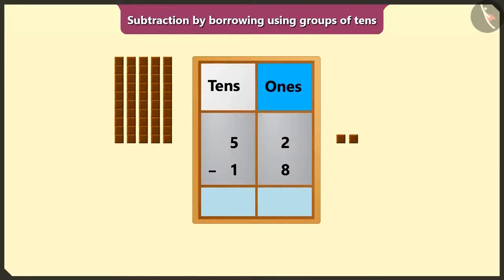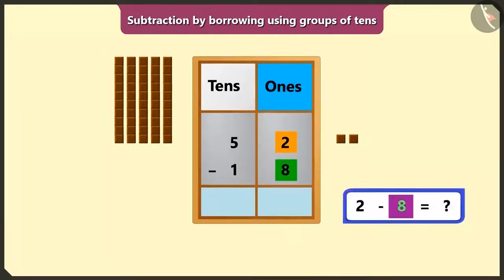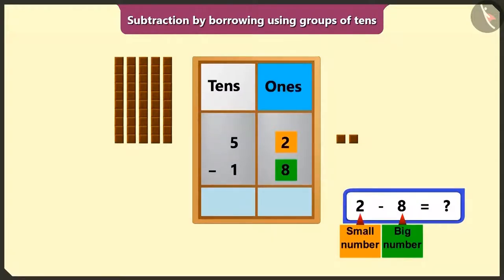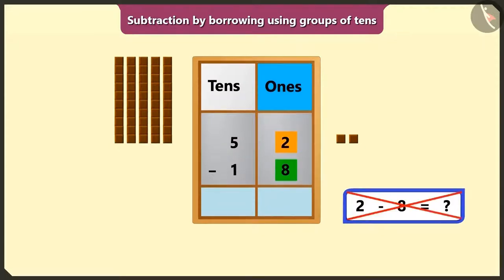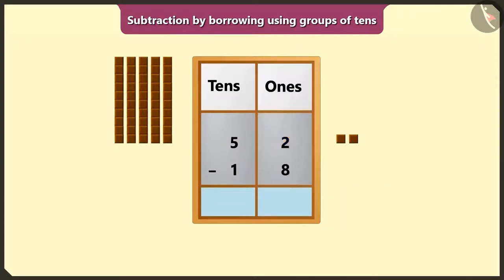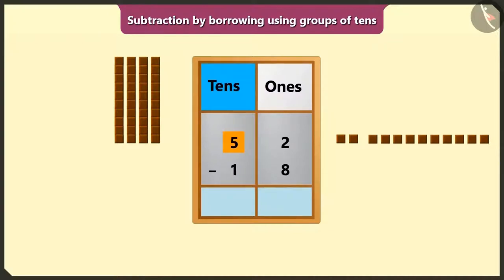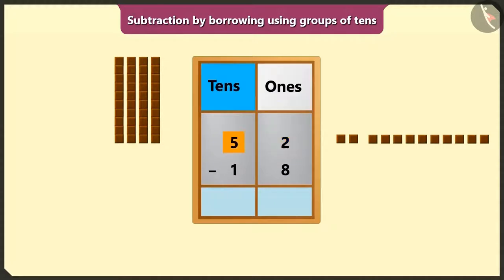First we will perform subtraction of the numbers in the box of ones. But here 2 is a smaller number compared to 8. So how can we subtract a big number from a small number? We cannot subtract a big number from a smaller number. So here we will borrow 1 ten from the number 5 of the box of tens. The number in the place of ones can borrow from its neighbor number in the box of tens.